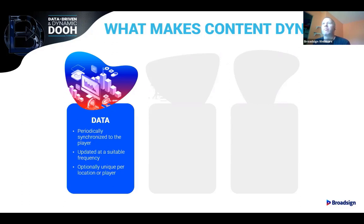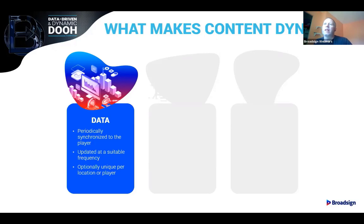However the data is provided, it does need to be put onto the player for it to access it. For remote data syncing, frequently synchronizing it is often better than a live feed since it increases network resiliency. If the network drops just for a second at the time you need the data, having it already on the player allows the content to still function. In certain circumstances, if a live feed isn't available, it might be desirable to skip the content entirely — for sports scores or medal counts where the information is updating in real time, it's probably better to pull the content than display stale content.